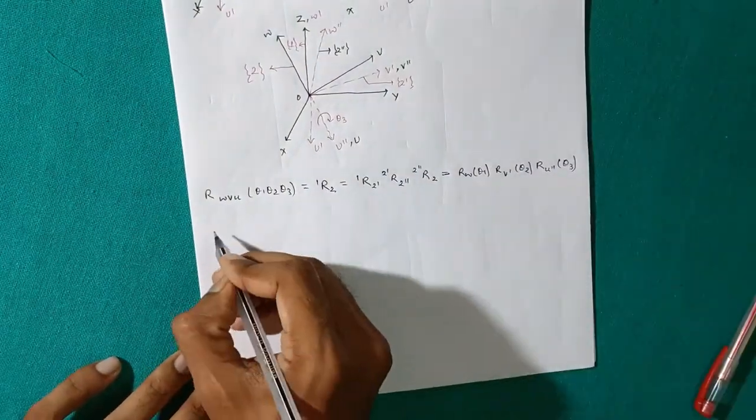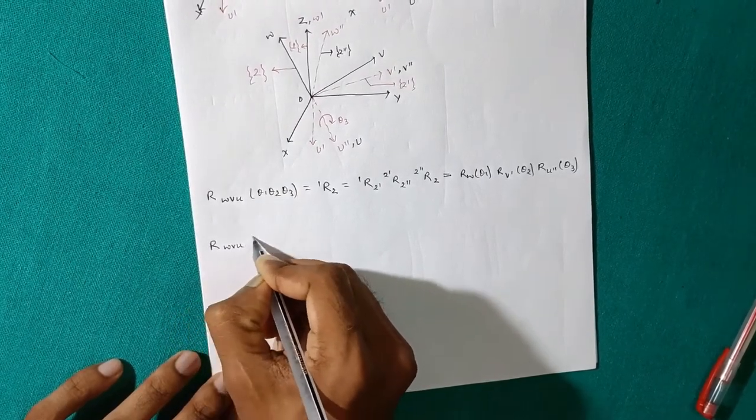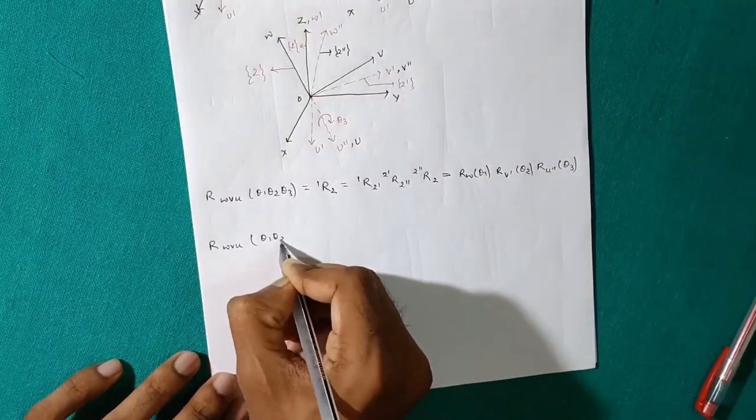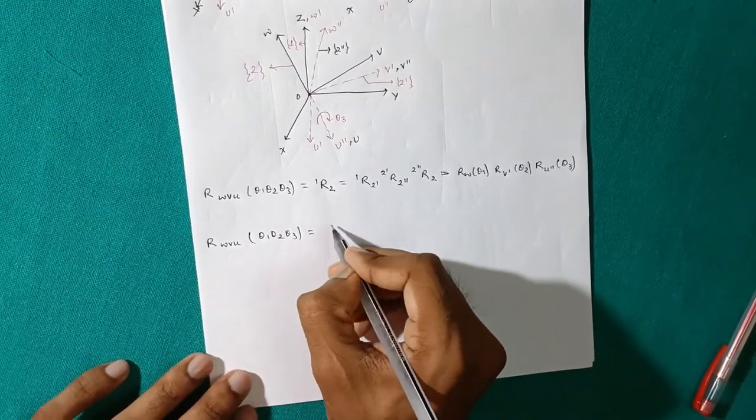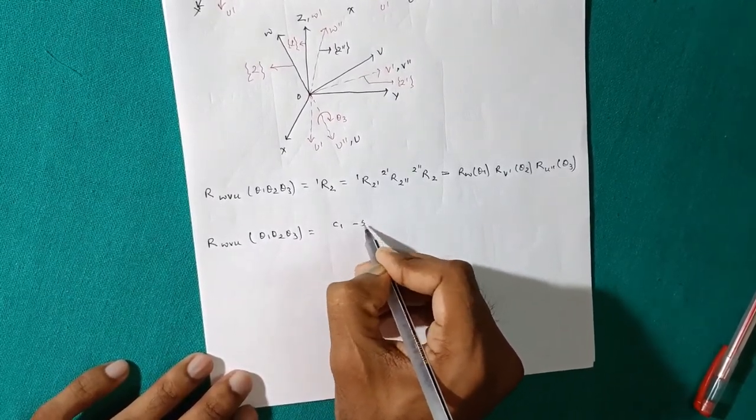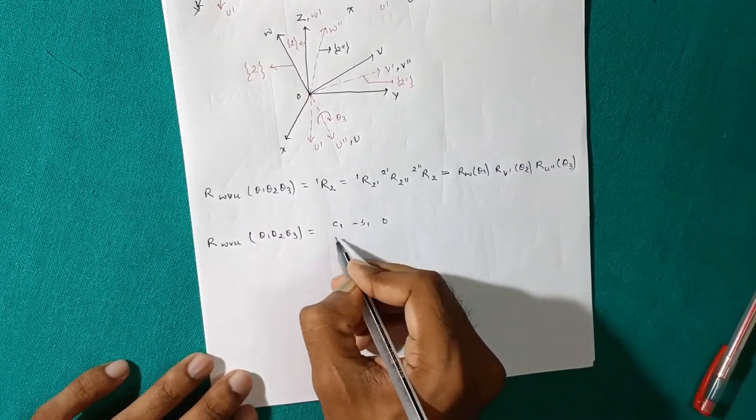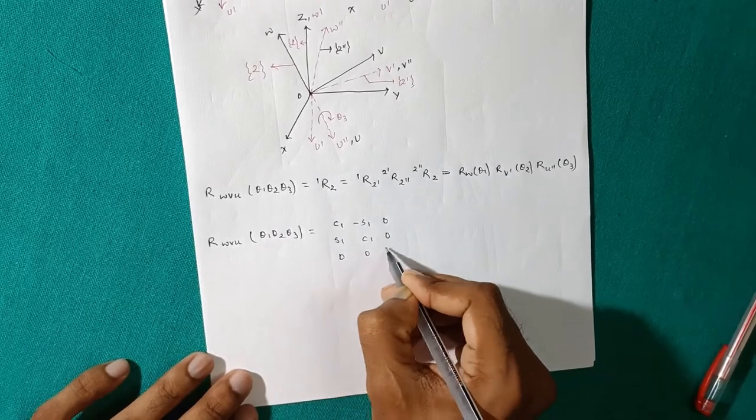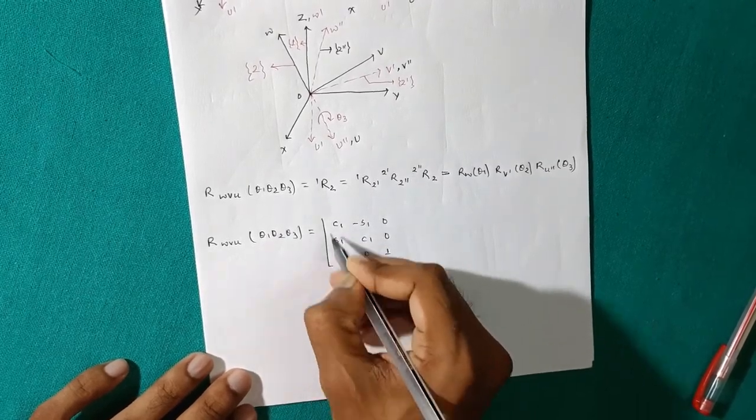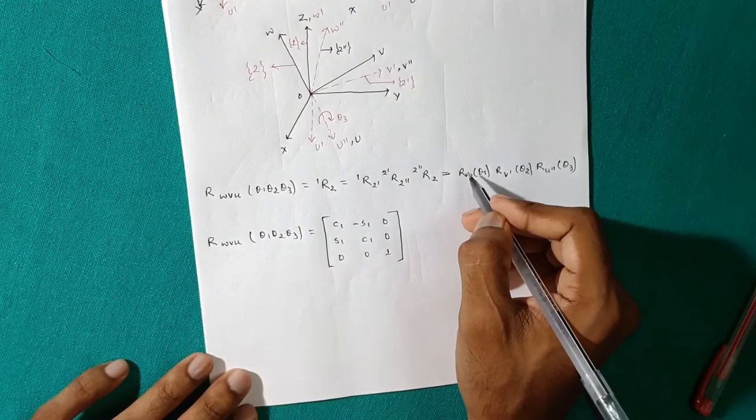So now, R_WVU theta1, theta2, theta3 is equal to: C1, -S1, 0; S1, C1, 0; 0, 0, 1. So this matrix is for R_W theta1.